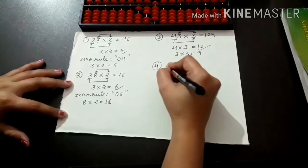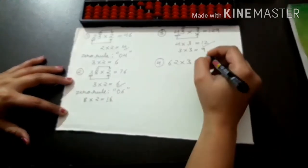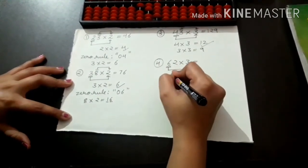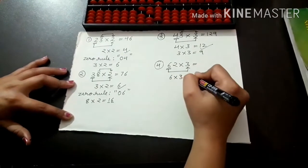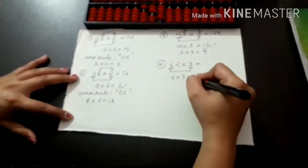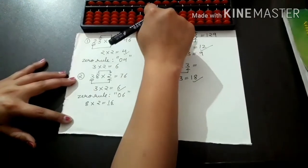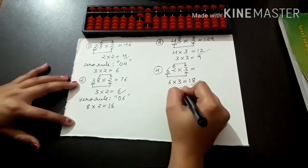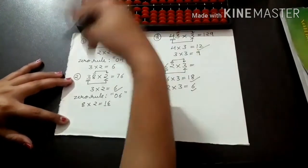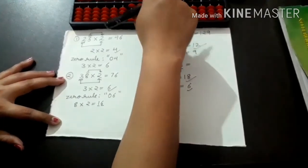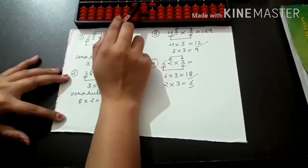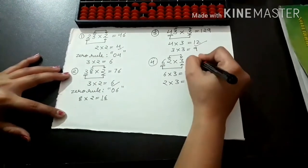The fourth question: 62 into 3. First multiply 6 into 3 equals 18. It is a double digit number, so set your Abacus and place 1 in the hundreds rod and 8 in the tens rod. Next digit: 2 into 3 equals 6. Place 6 in the units rod. Reading the Abacus: 100, 80, 6. The answer is 186.